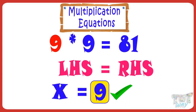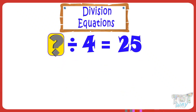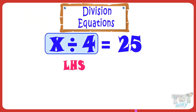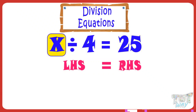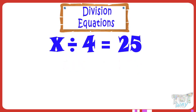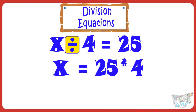Now let's take another example. If we divide a number by 4, it gives 25. What is the number? We can write this as the equation: X divided by 4 equals 25. X divided by 4 is LHS. Now let's find out the value of X. Let X be on LHS and shift the other number to RHS. While doing this, remember we have to reverse the sign before the numbers in LHS. So, retaining only X on LHS, we get X equals 25 multiplied by 4, as the sign before 4 was division.